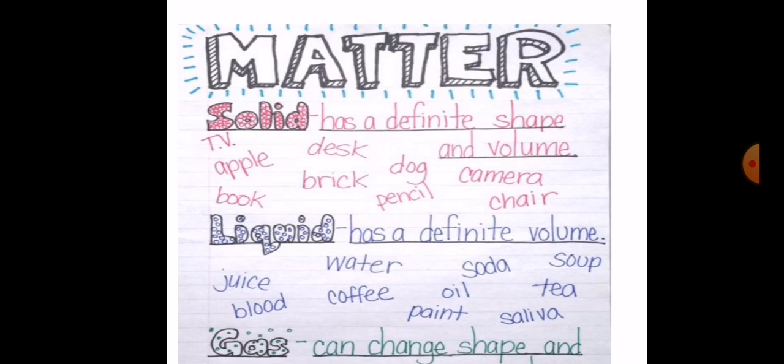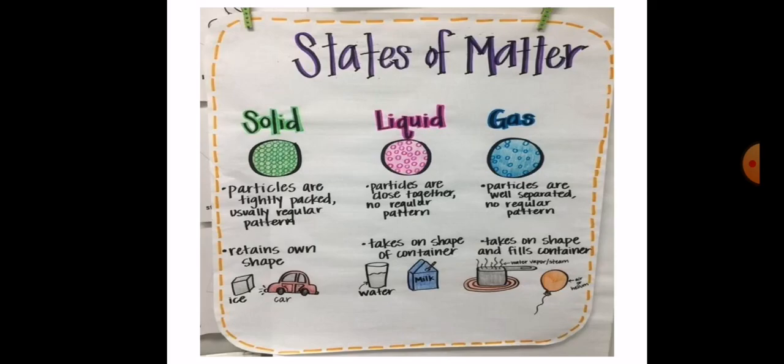So what are the states of matter? Matter has three states: solid, liquid, and gas. We can also call them the three phases of matter. We have solid, liquid, and gas.